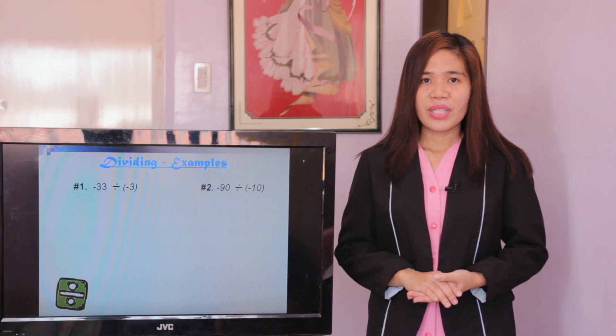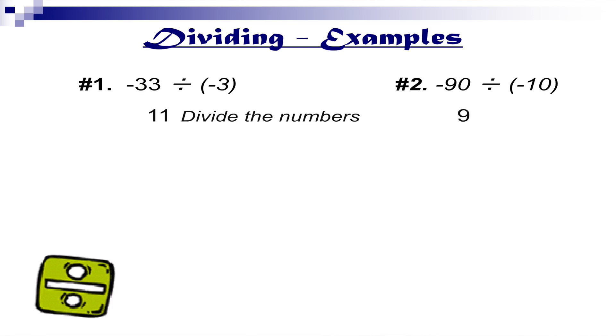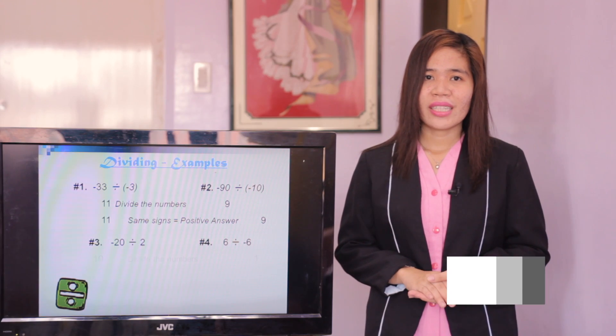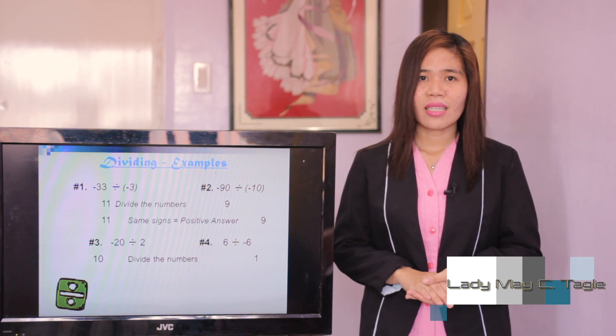Let's check the answers using the procedure. For examples 1 and 2: divide the numbers — negative 33 divided by negative 3 equals positive 11, and negative 90 divided by negative 10 equals positive 9. They have the same signs, so they have positive answers: positive 11 and positive 9. For examples 3 and 4: divide the numbers — 20 divided by 2 equals 10, and 6 divided by 6 equals 1. They have different signs, so they have negative answers: negative 10 and negative 1.